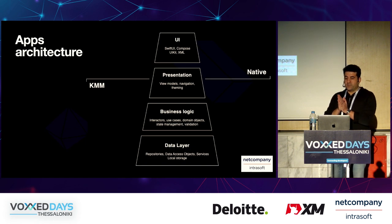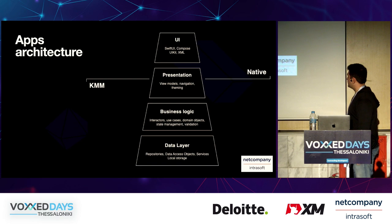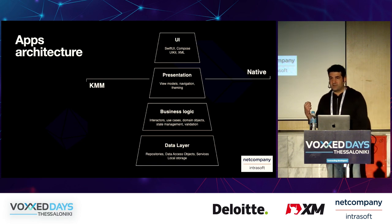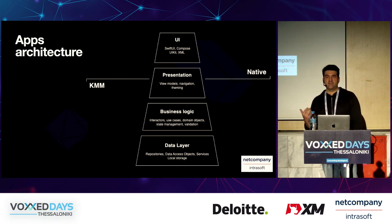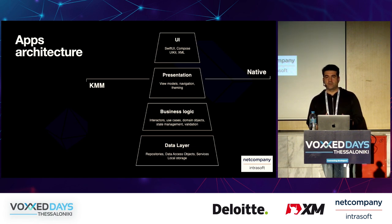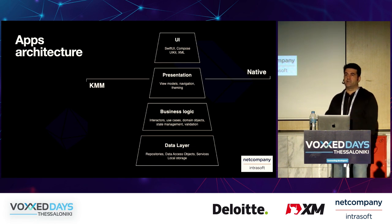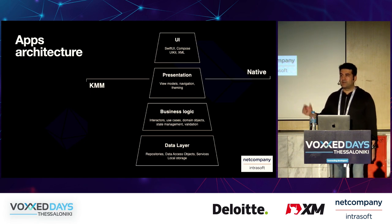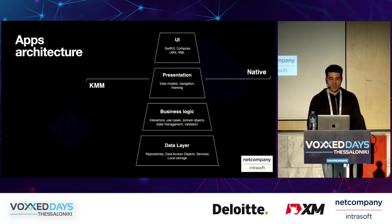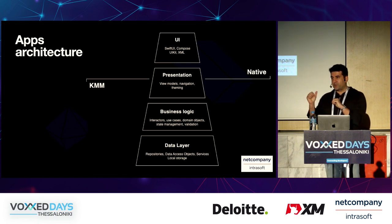Next up in the pyramid is business logic — the rules of your system: your interactors, use cases, domain objects, state management, and validation to ensure data consistency and integrity. The business logic layer knows about the layer below and itself, but nothing about the presentation layer above. Business logic is 100% KMM shared.